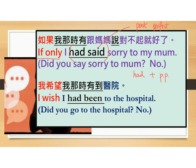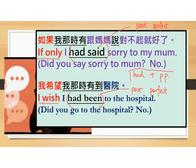我希望我那时候有去到医院。 In English: I wish I had been to the hospital. So, did you go to the hospital? No. Pay attention to the phrase 'I wish.' And also pay attention to the verb 'had been.' Again, it is in past perfect tense.